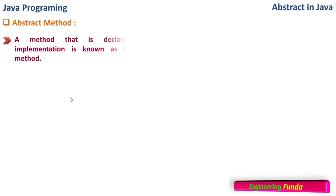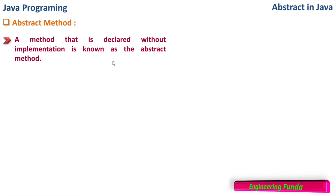What is an abstract method? A method that is declared without implementation is known as an abstract method. In the previous example, the method switch_off was declared without implementation — we don't know how the switching off of the phone is taking place, but it states that there should be a method which does the switch off of the phone.